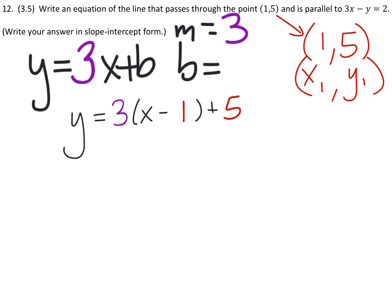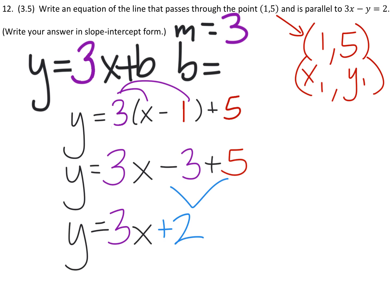So we'll go ahead and distribute the 3. So distributing the 3 here to the x and the minus 1 gives us 3x minus 3. Finally, the last thing we'll do is combine these two like terms, the constants negative 3 and 5. So we'll add those two together. And we'll get a positive 2 value there. And there we go. That is our final equation in slope-intercept form.